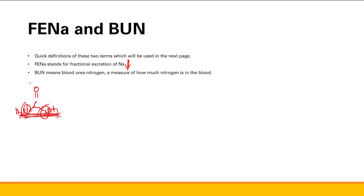What BUN tells you is that nitrogen is a waste product — a nitrogenous waste product you want to get rid of. Your kidney normally works to get rid of this urea. However, if your kidney is not working, your waste products are going to start building up, and thus you're going to have more nitrogen, more blood urea nitrogen. So higher BUN indicates that your kidney is not working as well as you'd like.